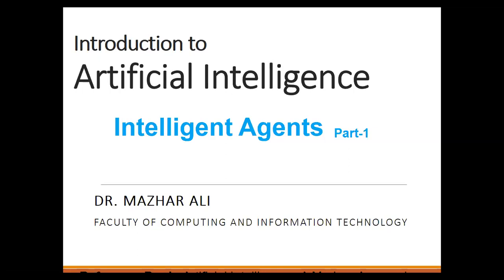Intelligent agents are often described schematically as an abstract functional system similar to a computer program. Abstract descriptions of intelligent agents are sometimes called abstract intelligent agents to distinguish them from their real-world implementations as computer systems, biological systems, or organizations. Some autonomous intelligent agents are designed to function in the absence of human intervention — for example, in industries or environments where humans cannot work, such as space exploration.